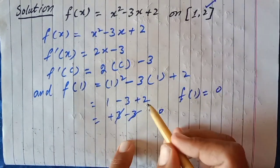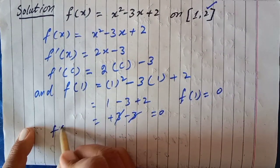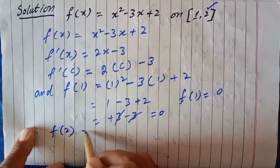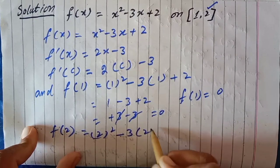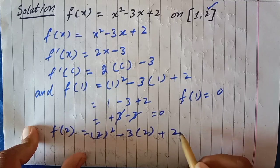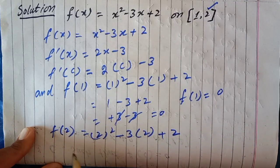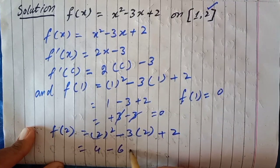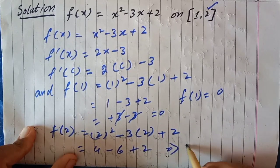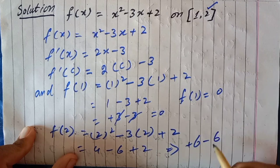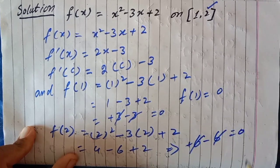Now we put 2. f(2) = 2² - 3(2) + 2, which equals 4 - 6 + 2. The 6 - 6 cancels, which equals 0.